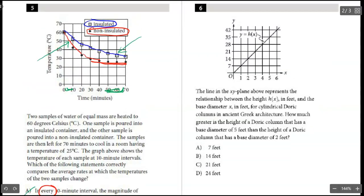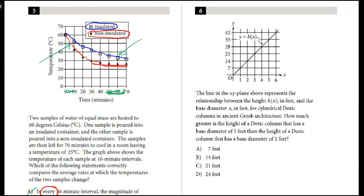All right, moving on over to number six. The line in the xy-plane above represents the relationship between the height h(x)—so be kind of careful here, h(x) is really the same thing as y—so this side is representing our height and the base diameter for the columns in ancient Greek architecture. So x over here, this is the diameter.